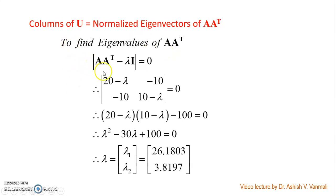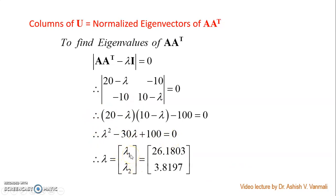So I will have determinant of (A·A transpose - λI) equal to 0. Along the diagonal I will have minus lambda terms: 20 - λ, -10, -10, 10 - λ. Solving this determinant equal to 0, we get the equation λ² - 30λ + 100 = 0, and the corresponding eigenvalues λ1 and λ2 will be 26.1803 and 3.8197.